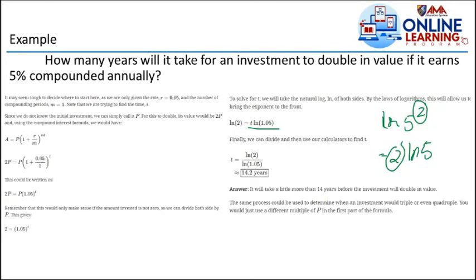So the initial investment is P, then to double it 2P. Using the compound interest formula, we have A equals P times 1 plus R all over M raised to n times t. So we have 2P equals P times 1 plus 0.05, this is the interest, divided by 1 because annually, raised to t. How long? This could be written as 2P equals P times 1.05 raised to t.